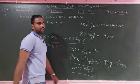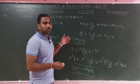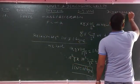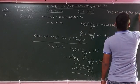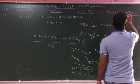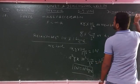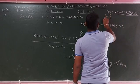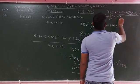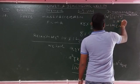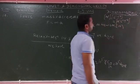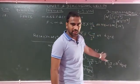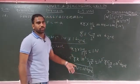Now the dimensional formula for force. The formula is mass into acceleration. Mass dimensional formula is M¹, and acceleration is L¹T⁻². So the dimensional formula for force is M¹L¹T⁻². The SI unit is Newton, CGS unit is dyne, and 1 Newton = 10⁵ dyne.